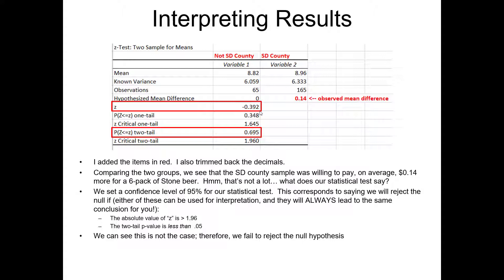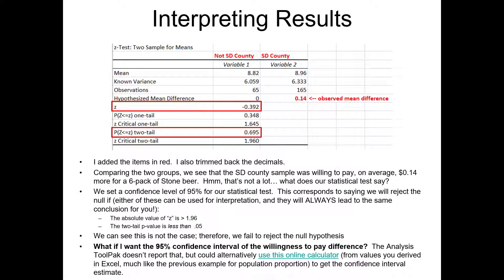As an extension, if you want the confidence interval of your observed difference — this 14 cents — you can show the 95% confidence interval of this difference with a high end and low end of the range, which can be useful to report. I've provided some links to online calculators that will derive that confidence interval for you. Unfortunately, the data analysis tool pack doesn't provide that particular summary of the statistic.